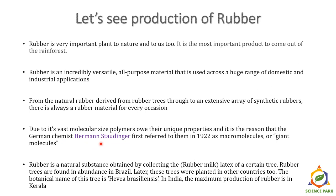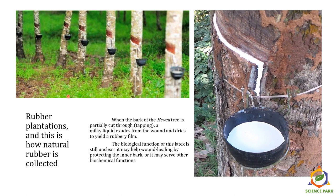Rubber is a natural substance obtained by collecting the rubber milk — scientifically known as latex — from a certain tree. Rubber trees are found in abundance in Brazil, and later these trees were planted in other countries too. The botanical name of this tree is Hevea brasiliensis. In India, the maximum production of rubber is in Kerala. Here I am showing you a picture of rubber plantations — huge acres of land planted with rubber trees.